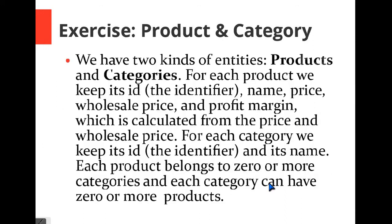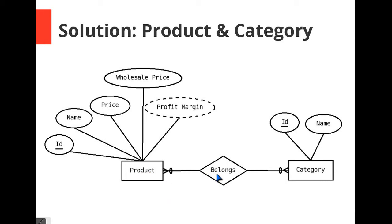The last part says each product belongs to zero or more categories, and each category can have zero or more products. So one product belongs to zero or more categories — this is the cardinality — and one category can have zero or more products. This is a many-to-many relationship because the maximum cardinality for the product is many and the maximum cardinality for the category is also many. So we look at the two maximum cardinalities and we have a many-to-many relationship.